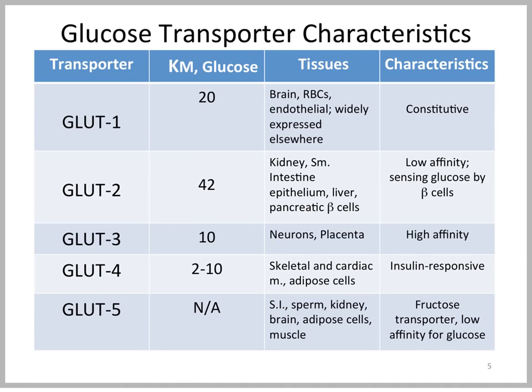There are several glucose transporters. The insulin-sensitive or insulin-dependent glucose transporter, which is primarily located in muscle cells and adipose cells, is GLUT4. This is a high-capacity, low-affinity transporter.